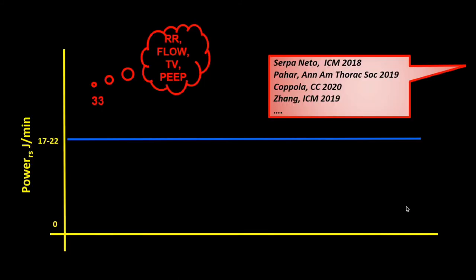What does 33 joules per minute mean? A value greater than 17 to 22 joules per minute indicates we are in the higher risk range. This has been proven in many recent studies showing that mechanical power above 17 to 22 joules per minute results in a higher risk of VILI. Once you identify a high-risk value, the parameters to try to reduce are the respiratory rate, the flow, the tidal volume, and the PEEP — so that you can bring the mechanical power back to a safer baseline, though this may not be possible in all cases.